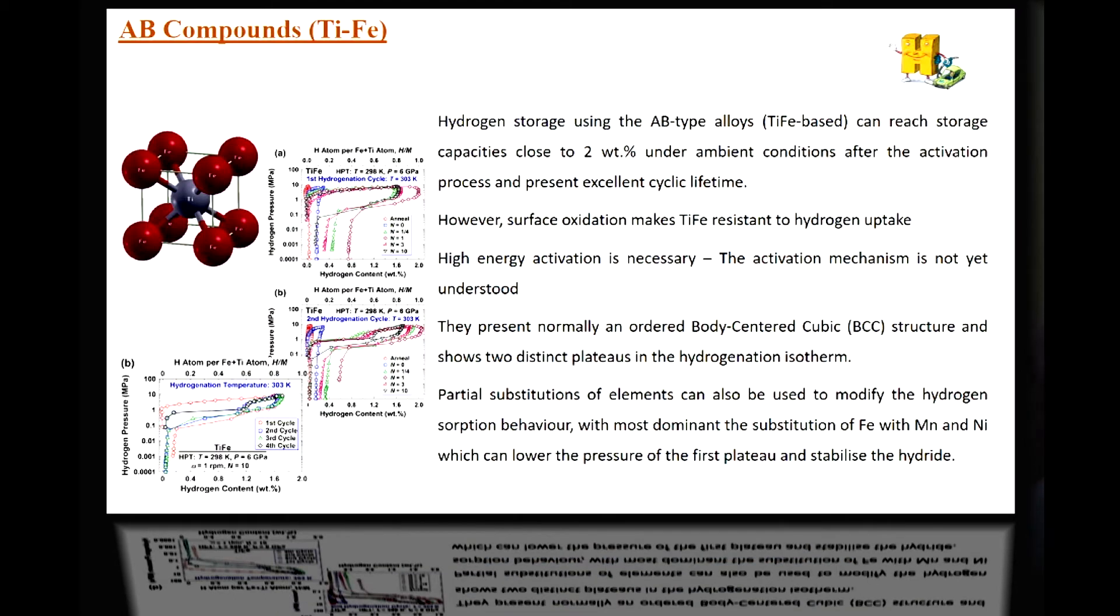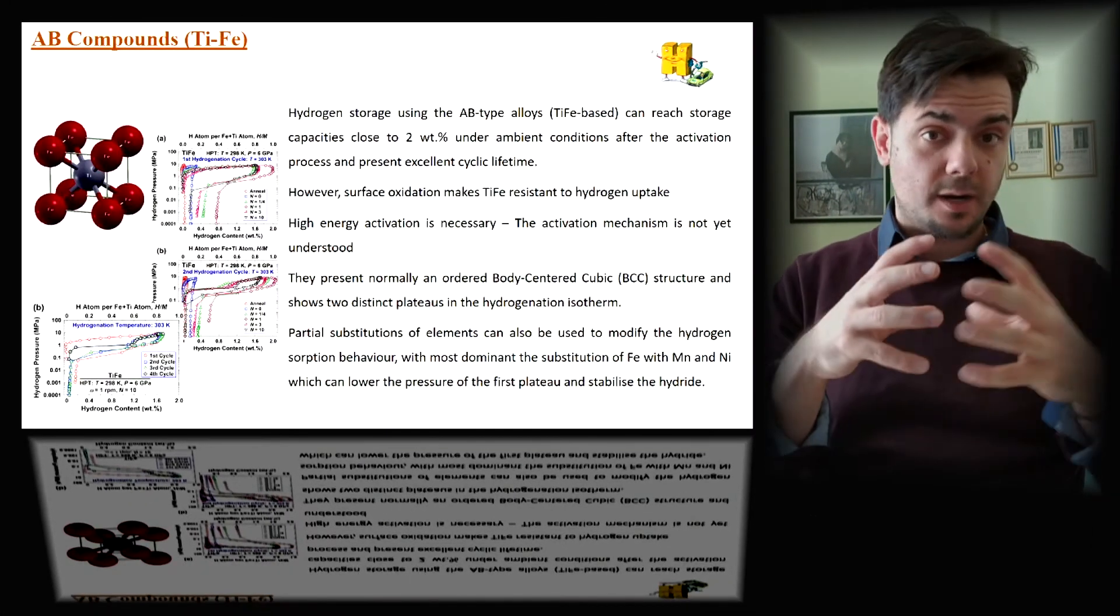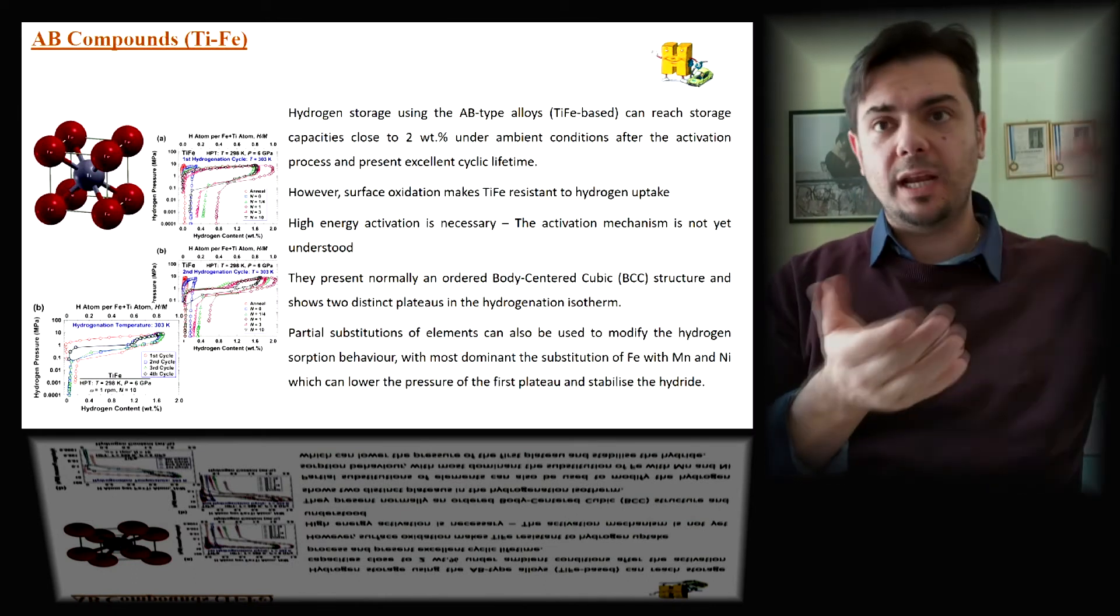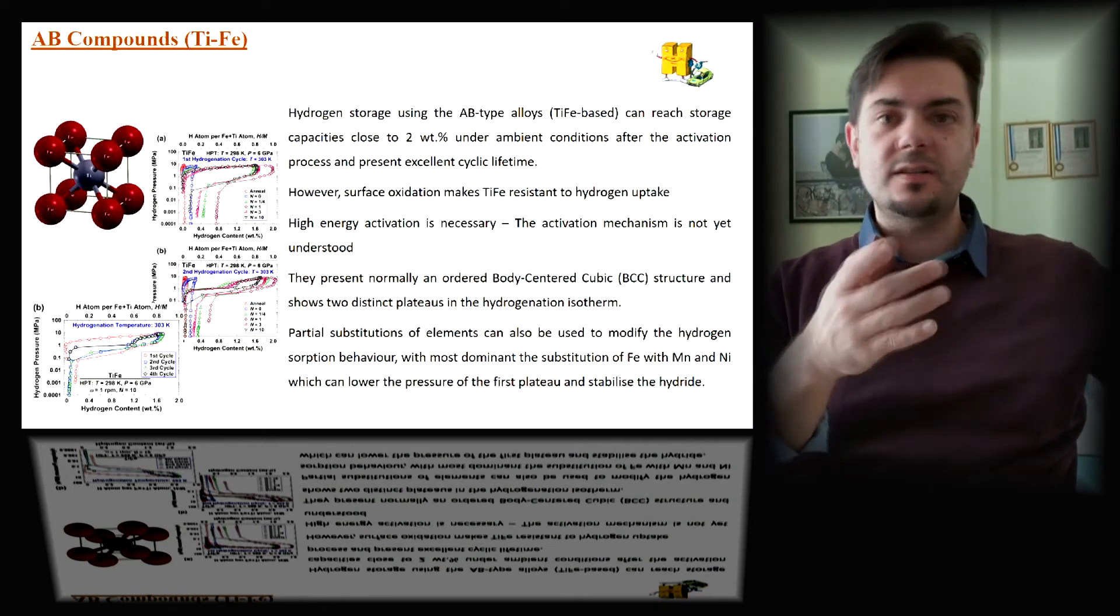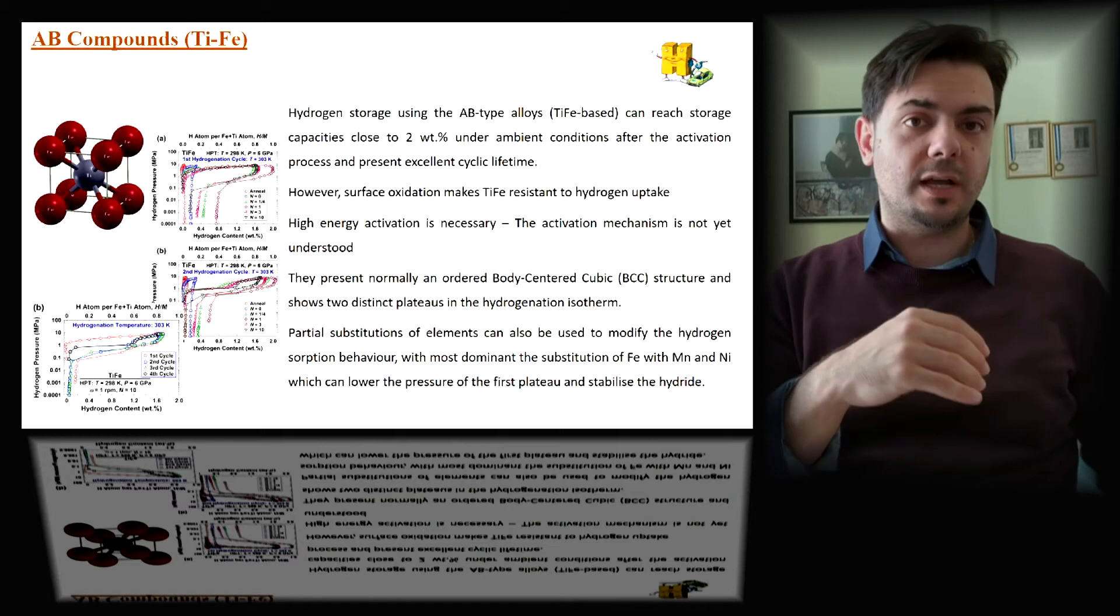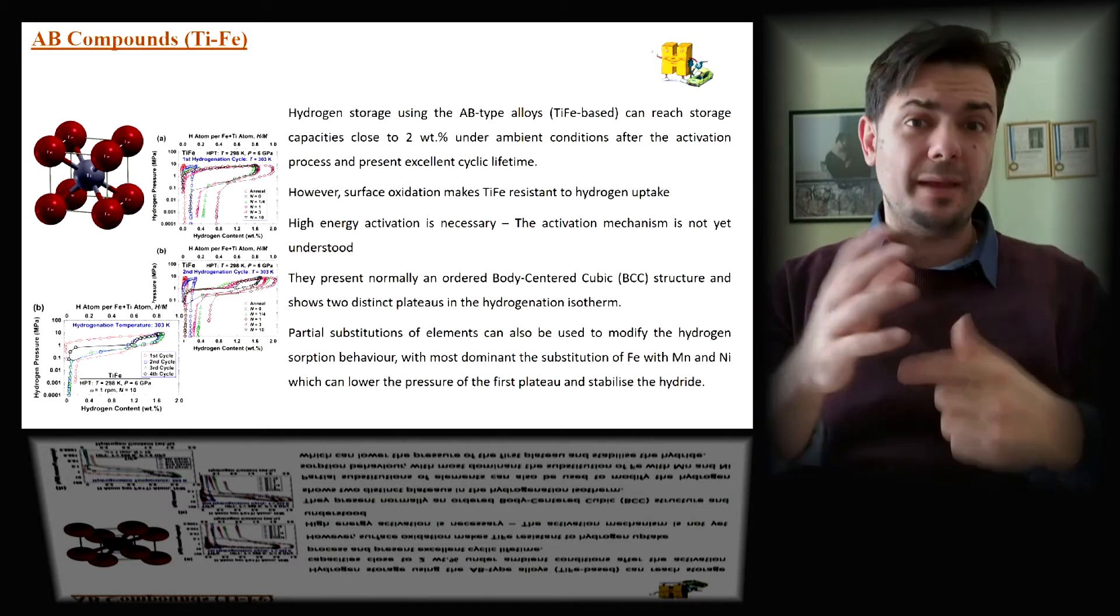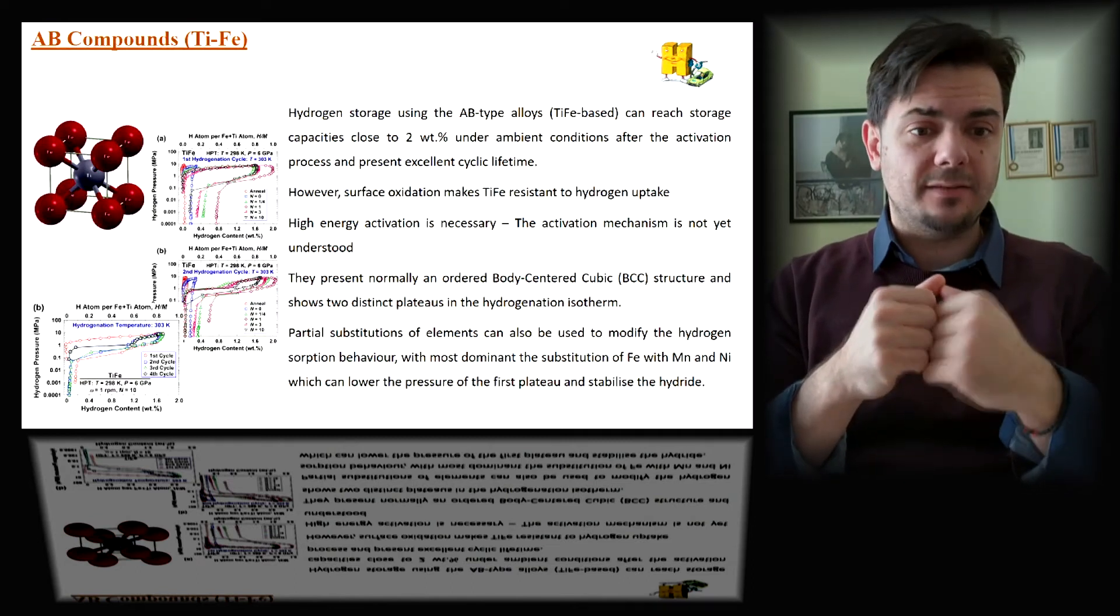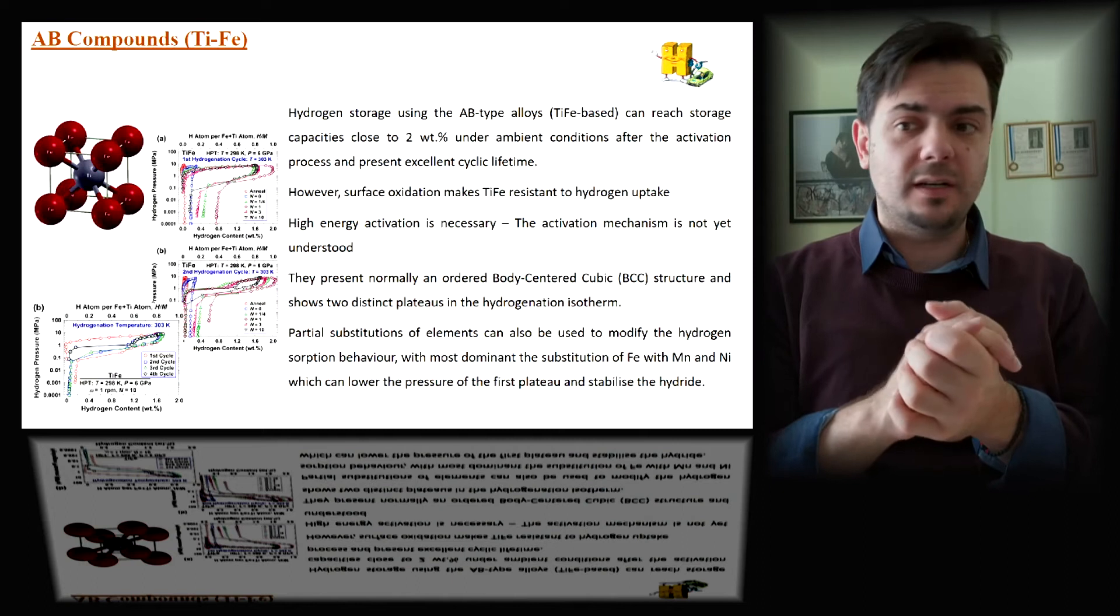Another really important family is the AB compounds, the titanium iron compounds. These compounds can go up to 2% of their weight under ambient conditions. But sometimes when it comes to activation, there are problems. Normally, the activation needs a lot of energy. We have to go to really high temperature, leave it for a couple of hours, then go down to really low temperature, leave it for another couple of hours, and do this maybe eight to ten times. So when it comes to industrial-based stuff, that's costly, and for mass production, we have a small problem.